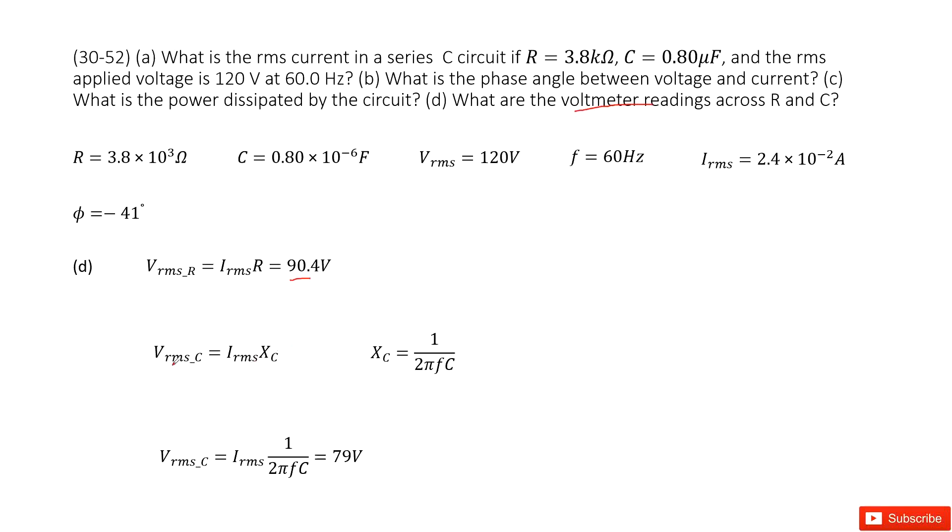Similarly, you can get a root mean squared voltage for C as the current root mean squared times the capacitance Xc. Input Xc inside. You get a equation. Look like this one. And input given quantity. Get answer there.